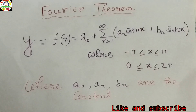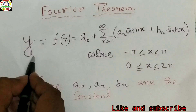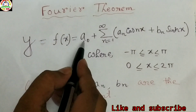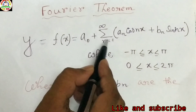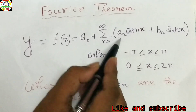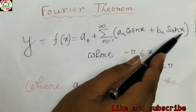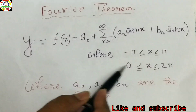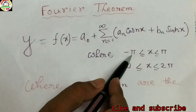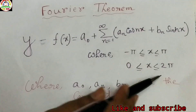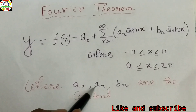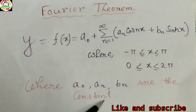The sine and cosine terms have commensurate frequency. Mathematically it is represented as y = f(x) = a₀ + Σ(n=1 to ∞) [aₙ cos(nx) + bₙ sin(nx)], where the limit of x is from −π to +π, or 0 to 2π. Here a₀, aₙ, and bₙ are constants called the Fourier coefficients.